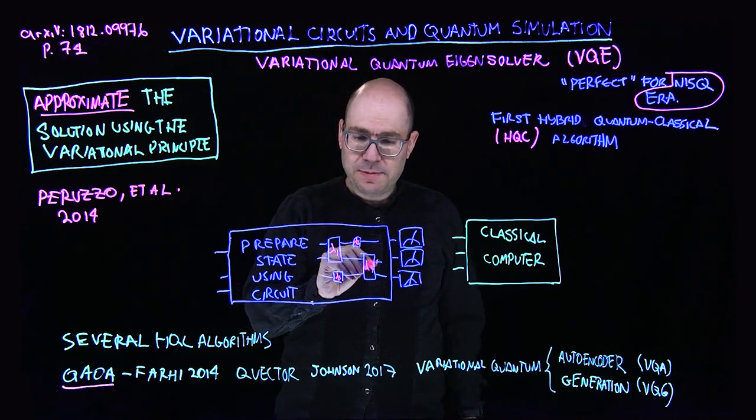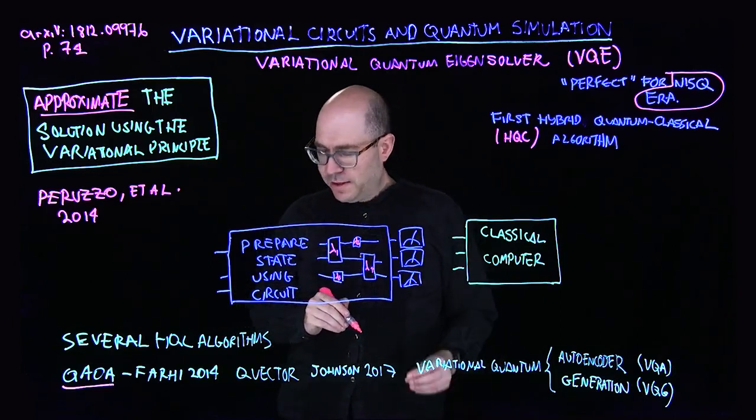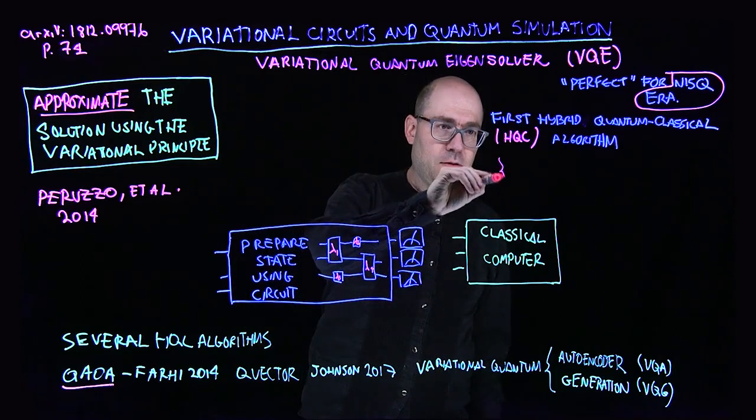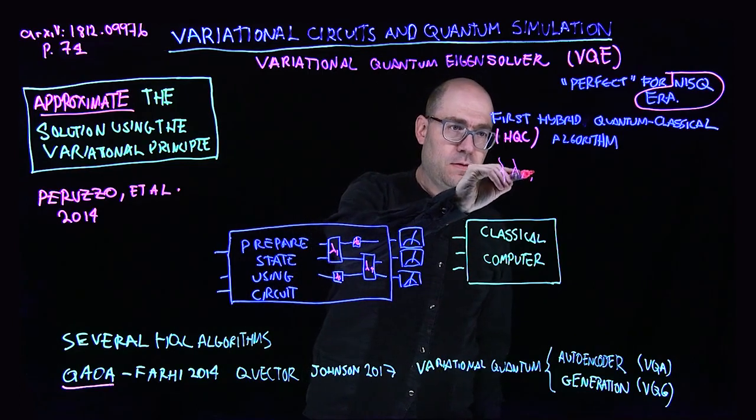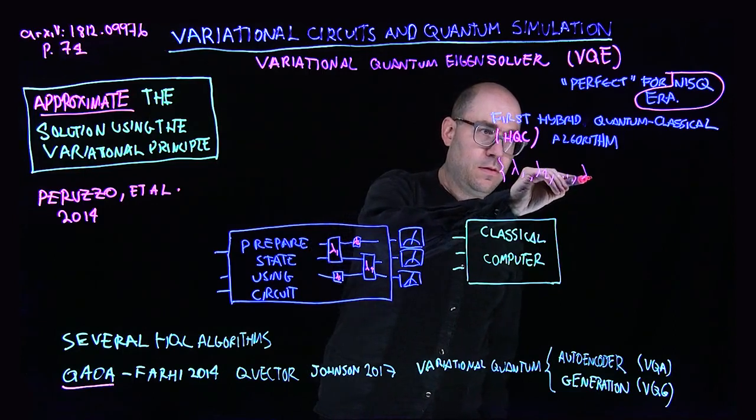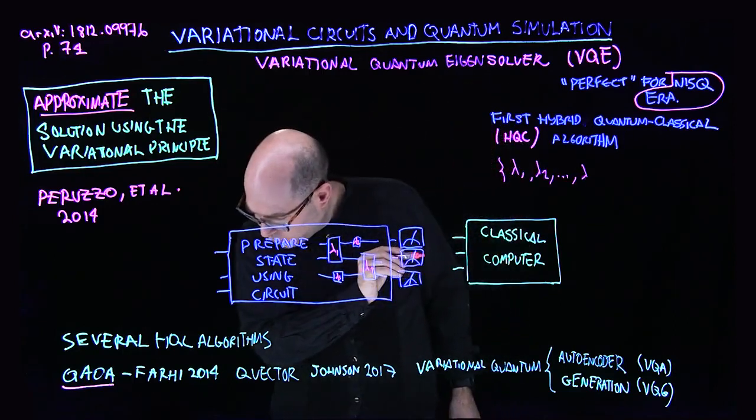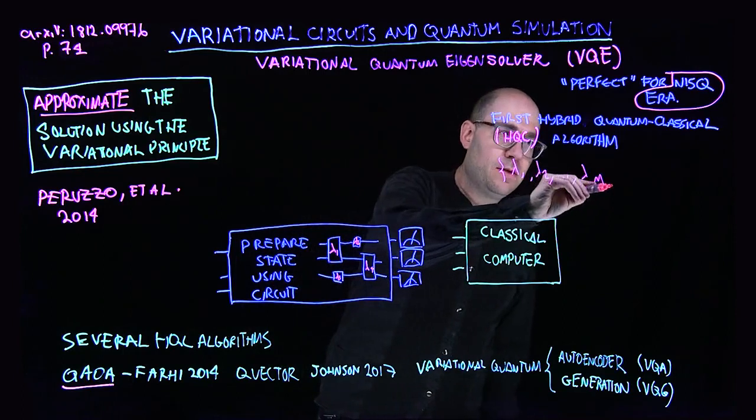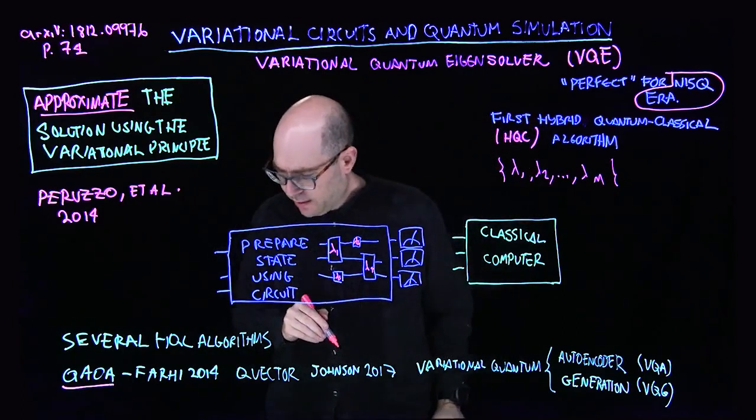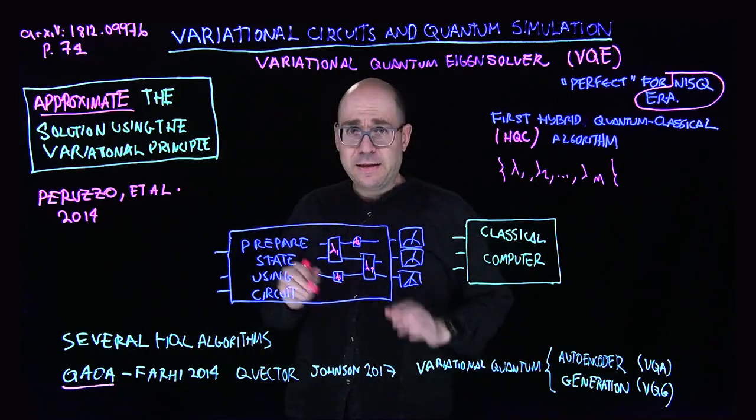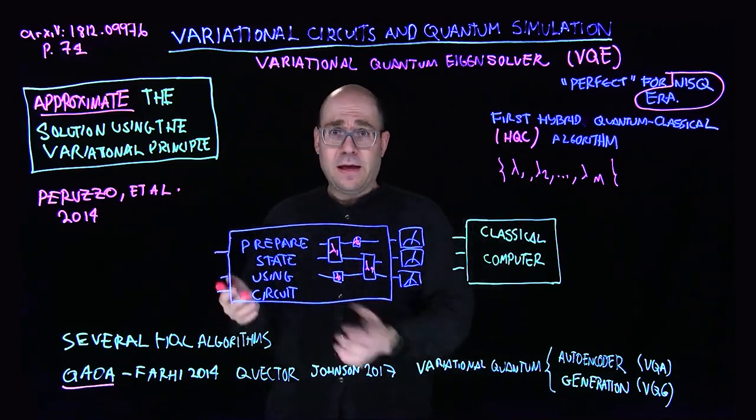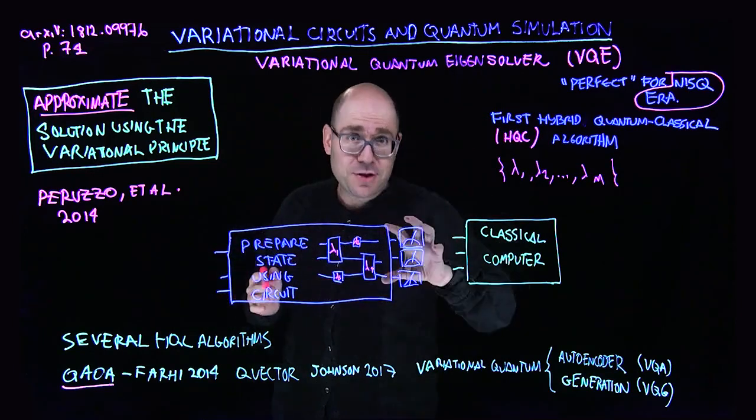And these parameters, I like to call them little lambdas, our little parameters that together form a parameter vector. And what did I use? I use m for the number of parameters. So, I have m parameters. Okay? That, at the beginning, I might set up with a classical guess. I might set them up randomly and I prepare a quantum state and I measure.